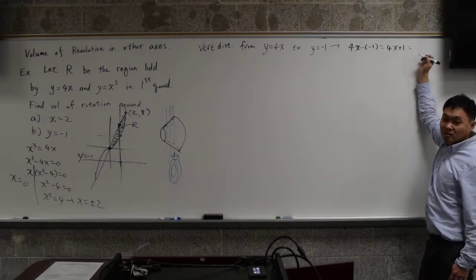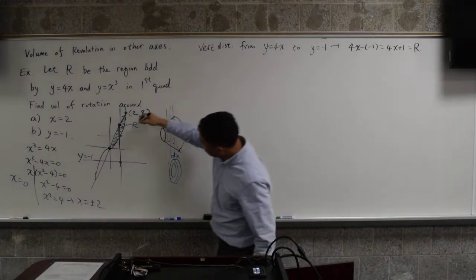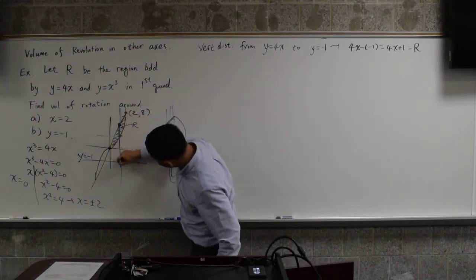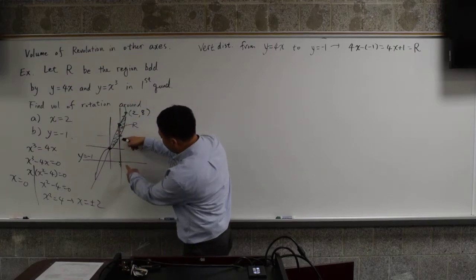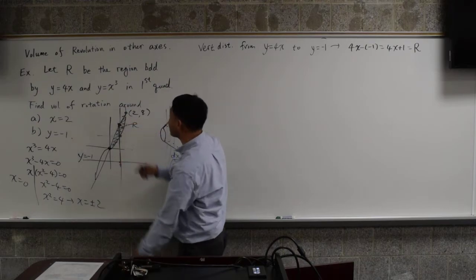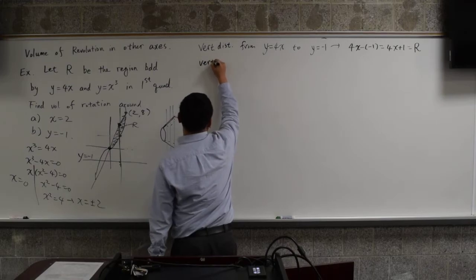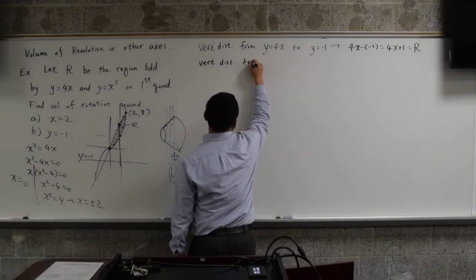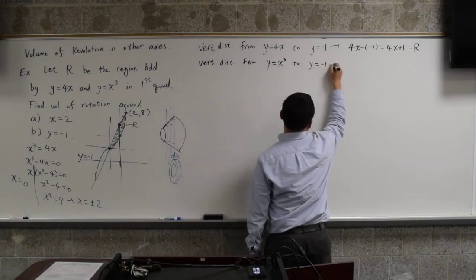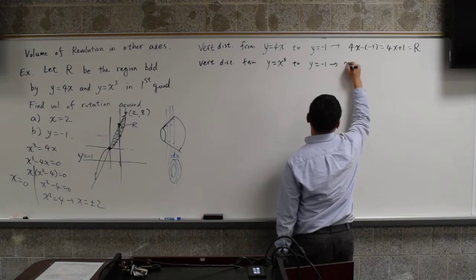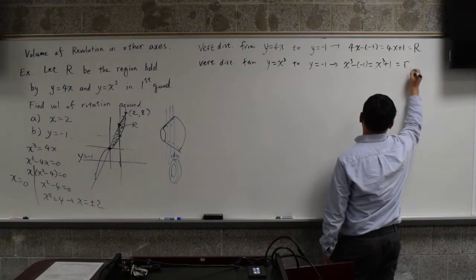Why? Because it's a straight line. It's this straight line, and we're talking about this distance. That's bigger than this one. If you rotate this around, this is going to be the small r, and this is going to be the big r. So that's your big r. From y equals x cubed to y equals negative 1, that's going to be x cubed minus negative 1, which is x cubed plus 1. That's your small r.